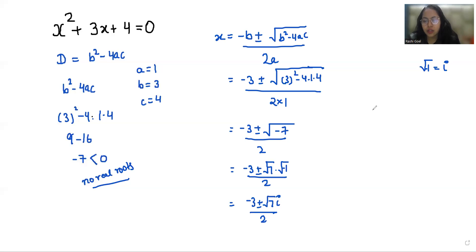x₁ = (-3 + √7·i) / 2 and x₂ = (-3 - √7·i) / 2. These are the two values of x.